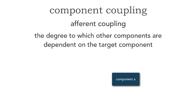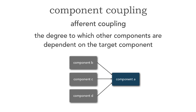So your component A — afferent coupling, or fan-in — says: who is dependent upon me? By the way, these could be components, in other words those building blocks of an application. These could also be services as well. All of that applies within component or service coupling.